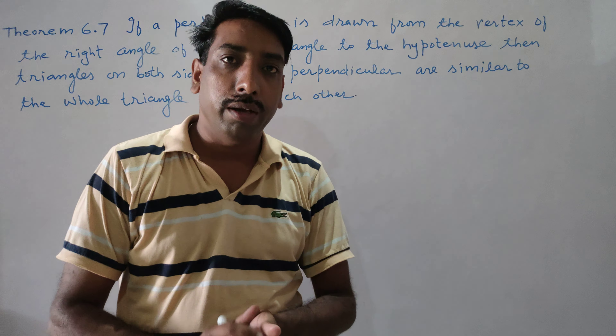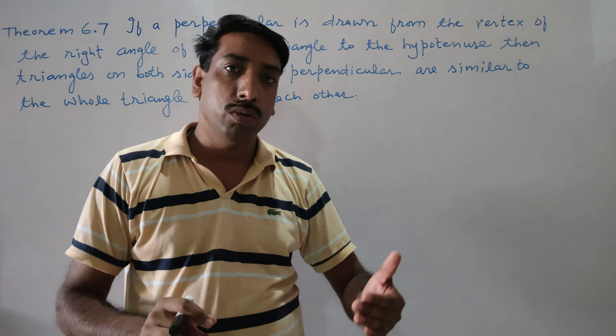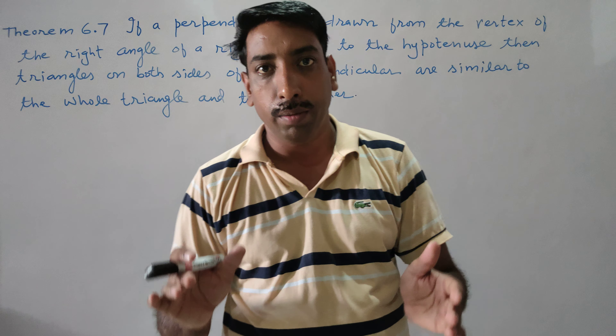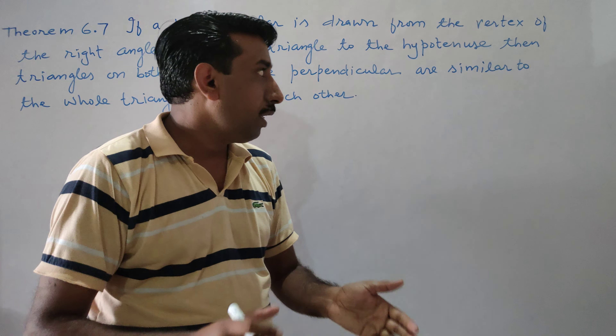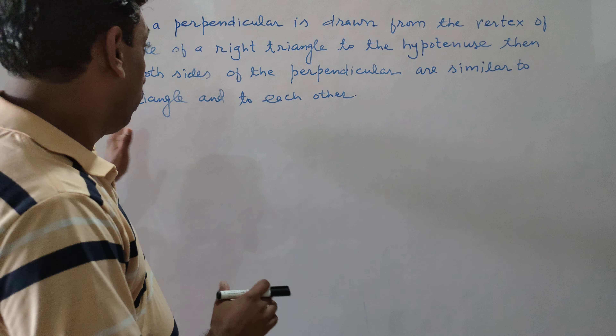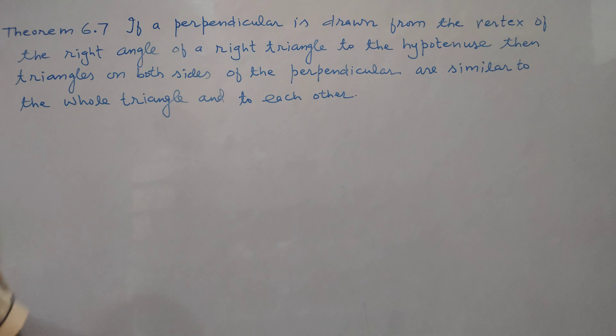So we have the right angle vertex, and from it a perpendicular is drawn to the hypotenuse of the right angle triangle. Now we will start the proof step by step — first the given statement, then we will draw the diagram.